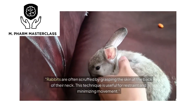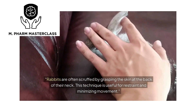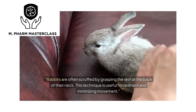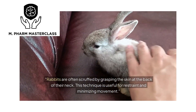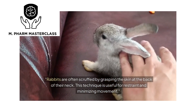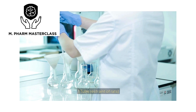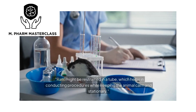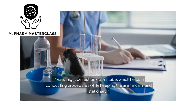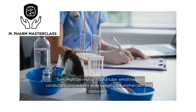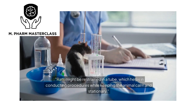Rabbits are often scruffed by grasping the skin at the back of their neck. This technique is useful for restraint and minimizing movement. Rats might be restrained in a tube, which helps in conducting procedures while keeping the animal calm and stationary.